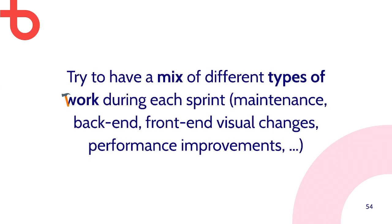Also try to have a mix of different types of work in each sprint — maintenance work, back-end work, front-end work, and visual changes. We made the mistake of working heavily on back-end improvements for a period where, if you visited the website two months apart, you'd see no visual change. Although a lot improved, some stakeholders at Sudol said: what are you doing? Even though the product owner knew, others at the large company didn't see visible progress. So try to include some front-end visual changes so everybody can see that work is being done.